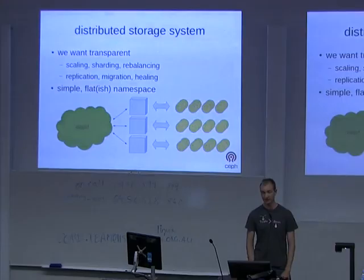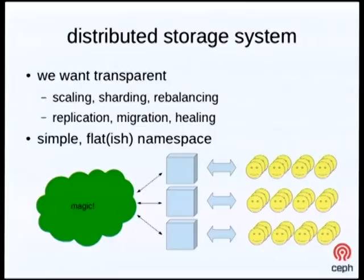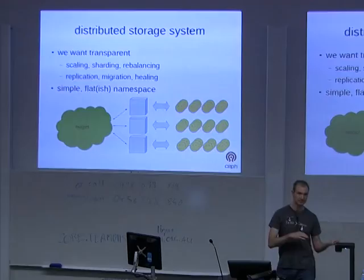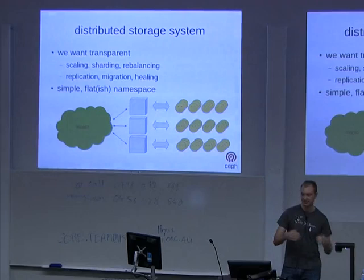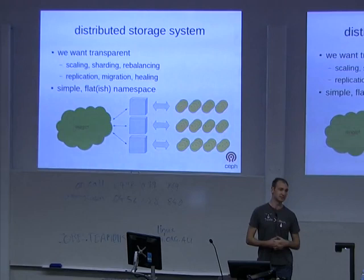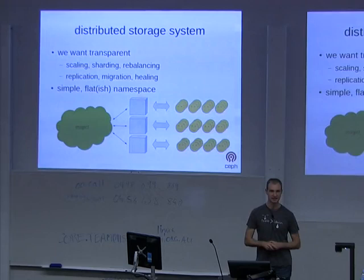What you really want is a distributed, magical storage system that sits behind your web application and deals with all the nitty-gritty details of scaling — sharding your data across multiple servers, rebalancing when you add new servers, replicating, migrating, healing when there are failures. In exchange for that, you're usually willing to give up some flexibility. You don't need to rename files, you don't need hierarchical directories, you're probably fine with a flat namespace. Life would be much simpler if you took this approach.